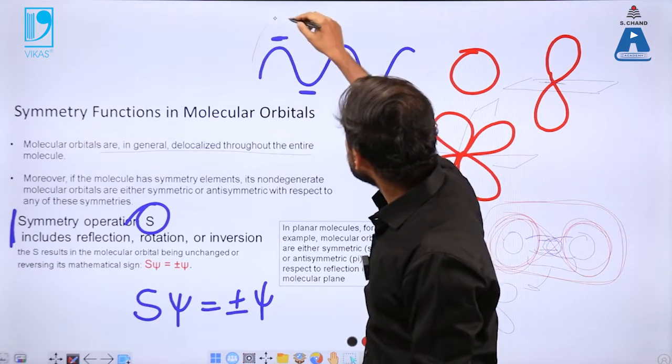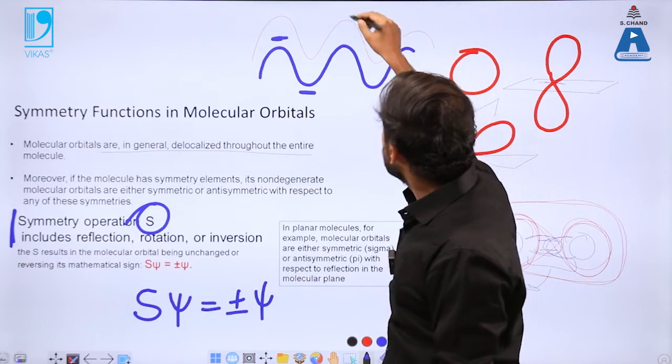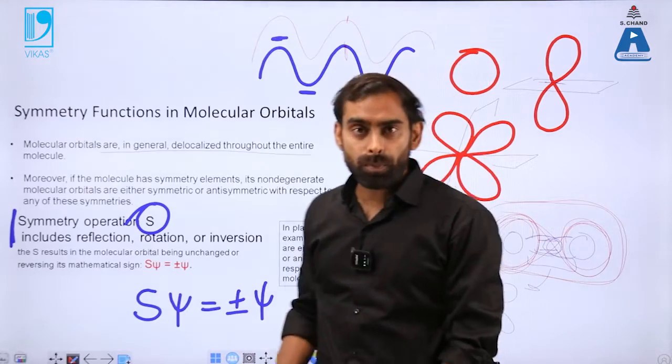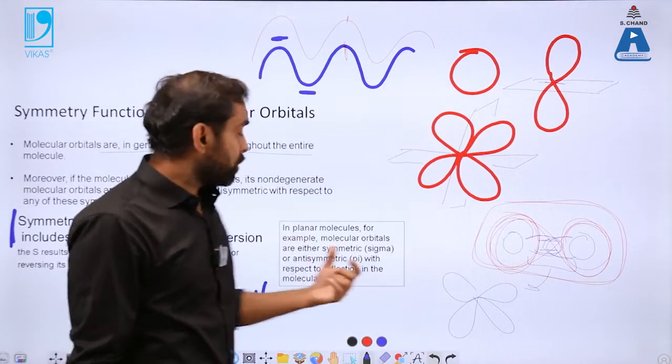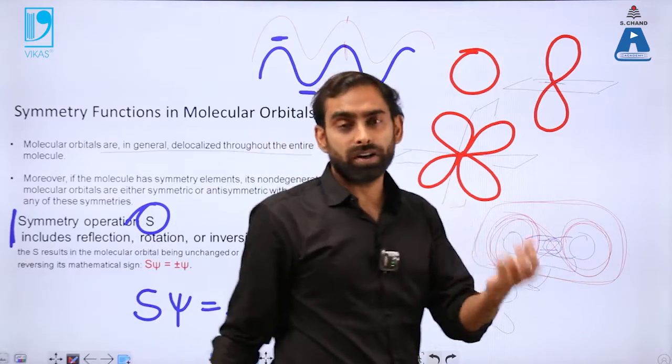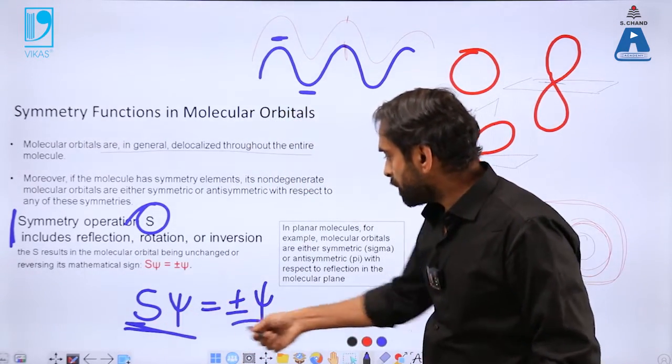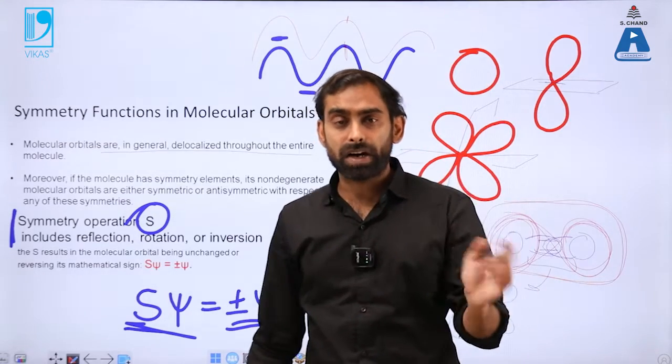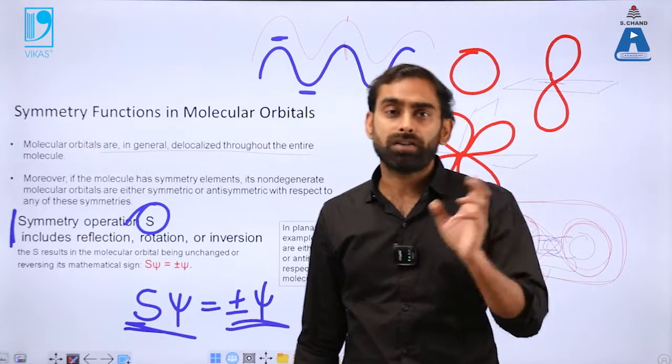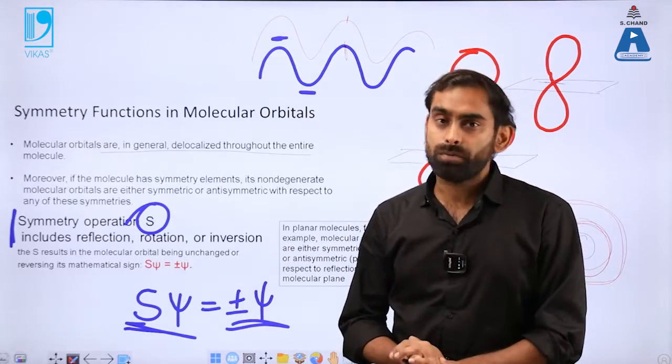When two waves are interacting together to give rise to a molecular waveform, in what symmetry are they doing so? Whether plus and plus are combining, meaning they are in the same phase, or they are in the opposite phase, that dictates the overall symmetry function of a molecular wave. That's why it has been written as psi equals plus or minus psi. It can be plus psi or minus psi depending on which part of the waveform is actually interacting to give rise to the molecular wave.